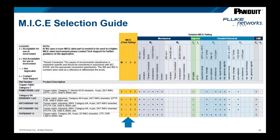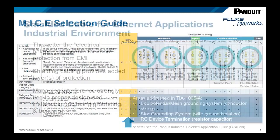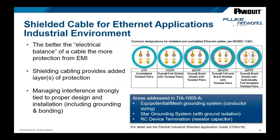It's important to recognize that MICE is an environment rating and the user has the responsibility to assess products and determine their use in the environment. Looking at another part of MICE — the E factor or EMI — this is probably the most consequential area. Problems in this area can cause intermittent network performance, which is one of the hardest things to trace and correct.